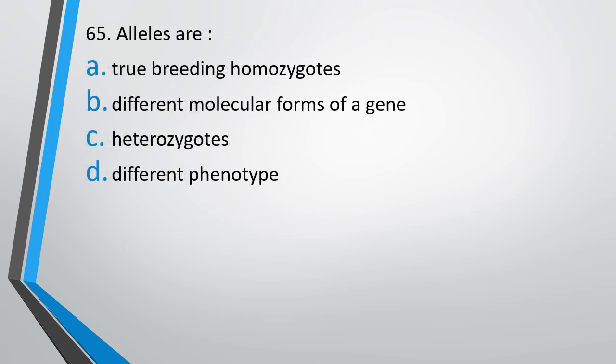Question number 65. Alleles are: true breeding homozygotes, different molecular forms of a gene, heterozygotes, different phenotypes. Alleles are - correct answer is option B, different molecular forms of a gene.